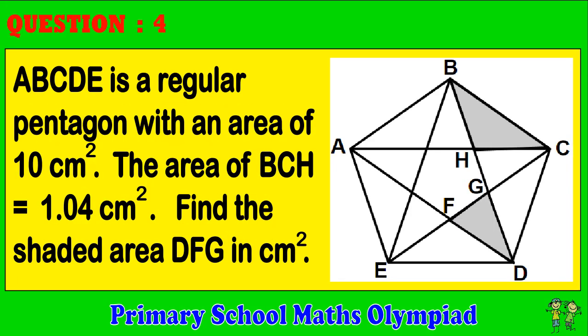Question 4: ABCDE is a regular pentagon with an area of 10 cm². The area of BCH equals 1.04 cm². Find the shaded area DFG in cm².